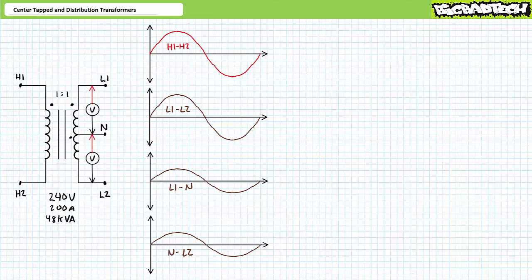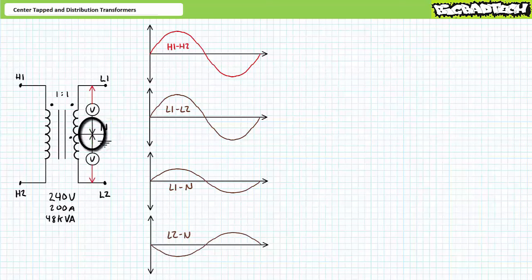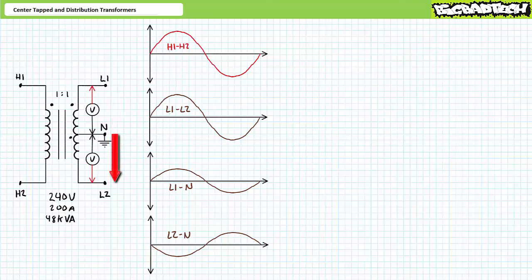Let us now consider two subtle modifications to this system. One: center tap N, henceforth called neutral, is ground referenced. Two: both voltmeters use the neutral connection as the reference. Voltmeter one measures L1 to neutral, positive to negative. Voltmeter two measures L2 to neutral, positive to negative.